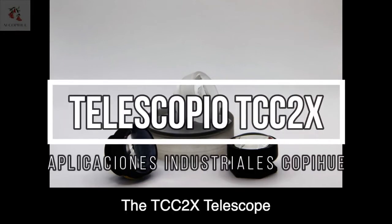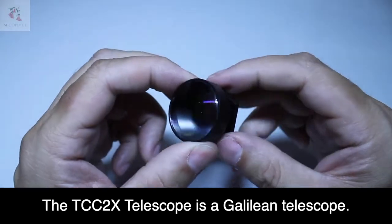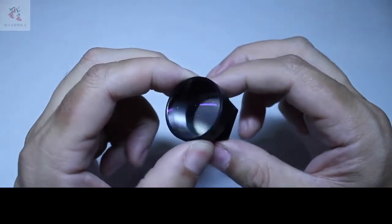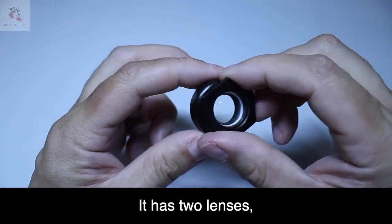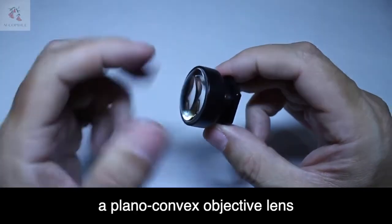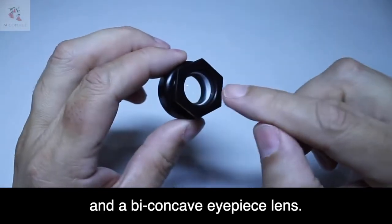The TCC-2X Telescope is a Galilean telescope. It has two lenses: a plano-convex objective lens and a biconcave eyepiece lens.